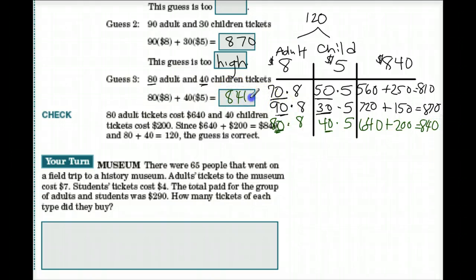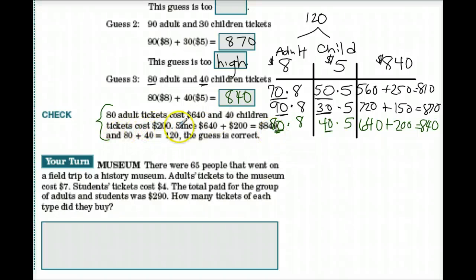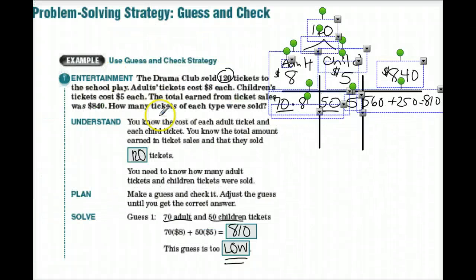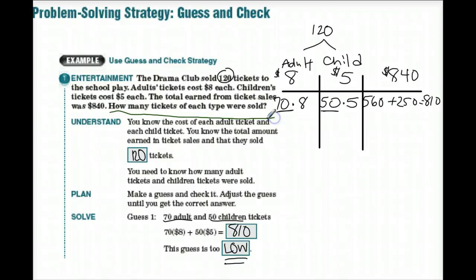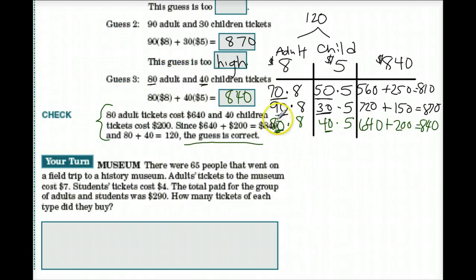Our answer in sentence form: 80 adult tickets cost $640, and 40 children's tickets cost $200. Since 640 plus 200 equals 840, and 80 plus 40 equals 120, the guess is correct. Going back to the original question — how many tickets of each type were sold? — the answer is 80 adult tickets and 40 children's tickets.